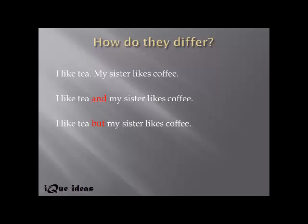But when I use 'but': 'I like tea but my sister likes coffee' — it contradicts the two persons and their preferences. It shows that unlike me, my sister likes coffee. So conjunctions have a particular job to do in a sentence, and the choice of conjunction changes the meaning.